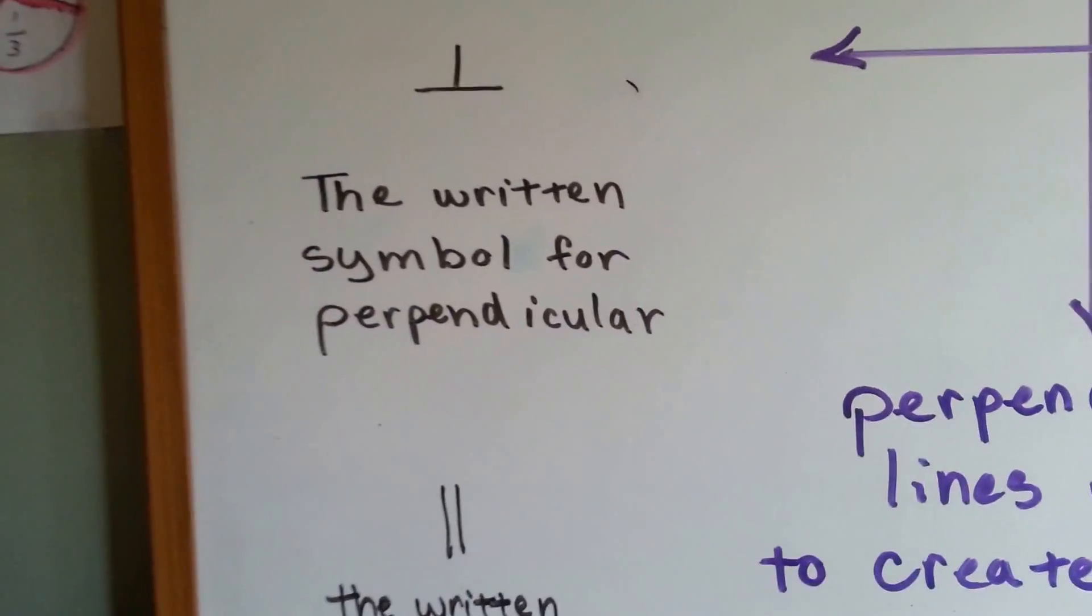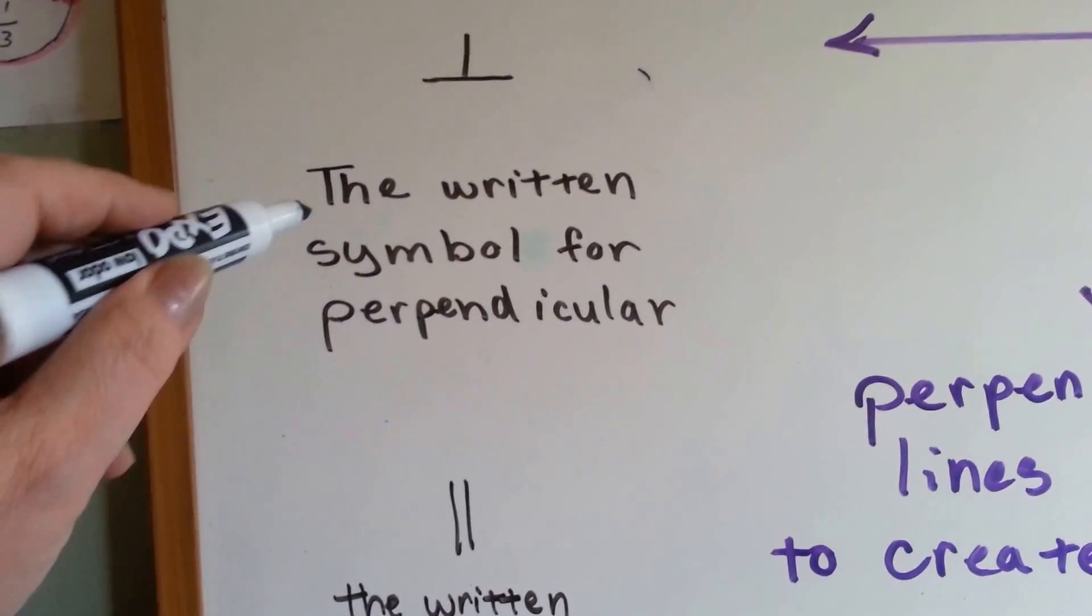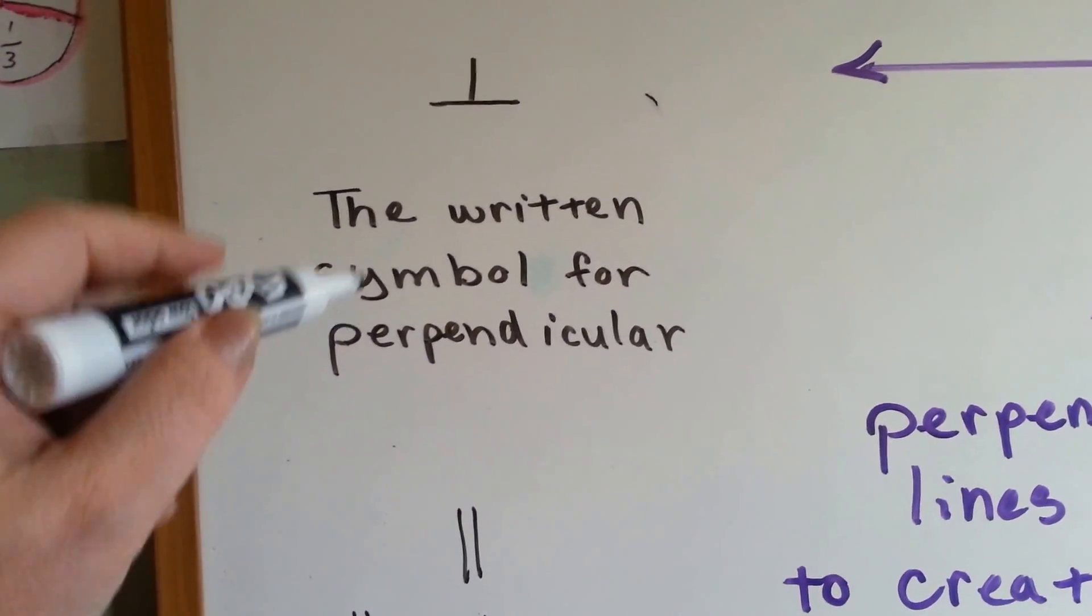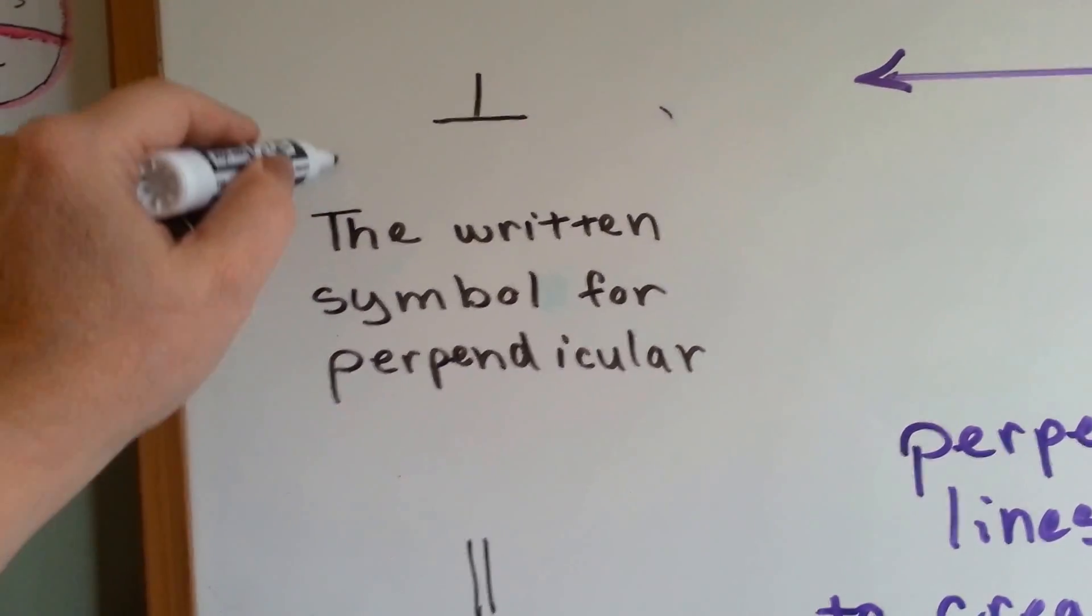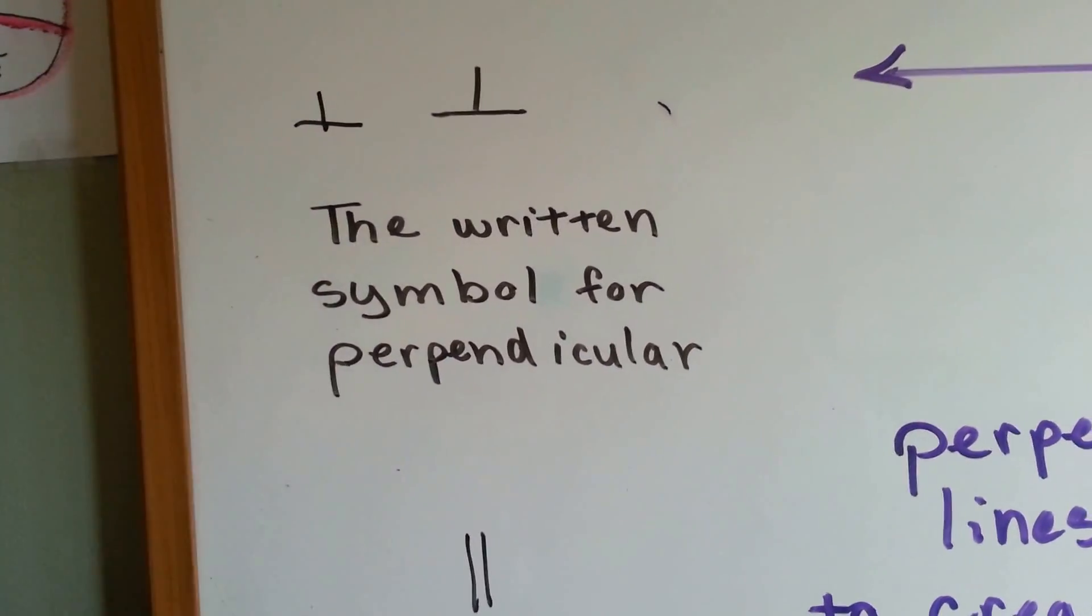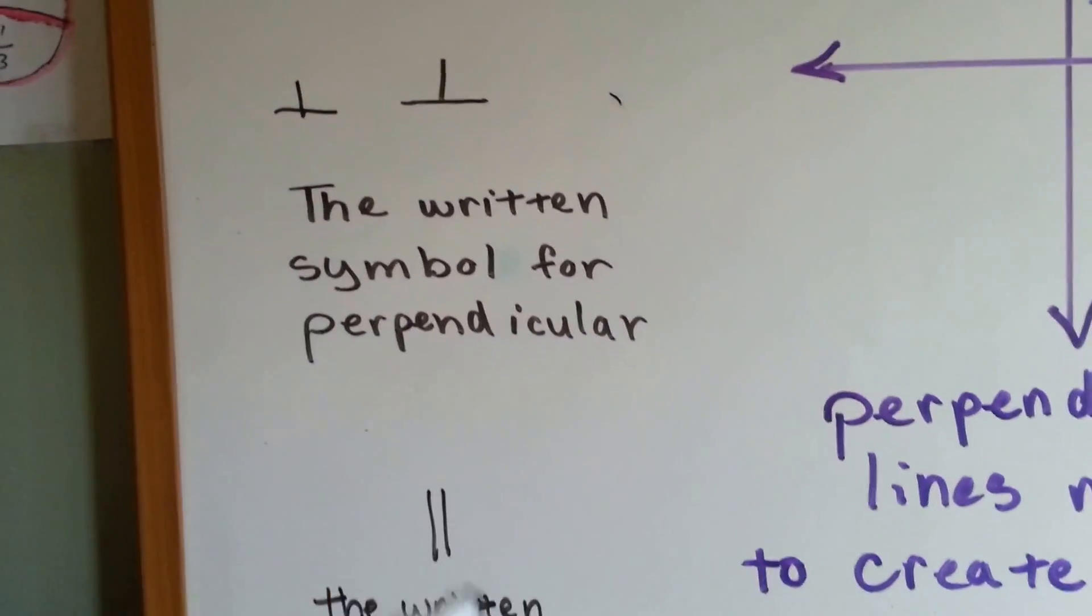The last thing I want to show you is there are some little symbols in geometry that people use. When you want to say that lines are perpendicular, they make this little shape. It's just a line with a little line coming off the top of it. That's the symbol for perpendicular.